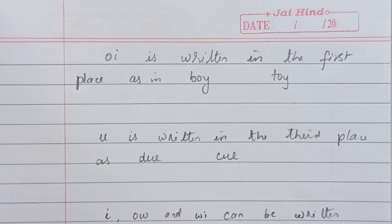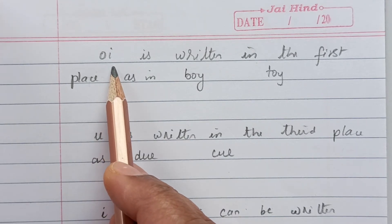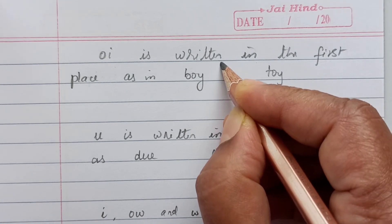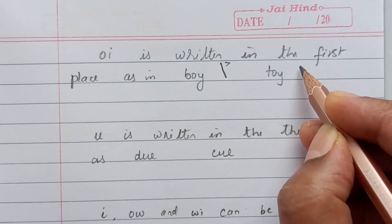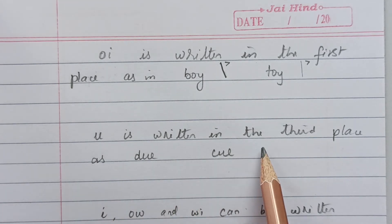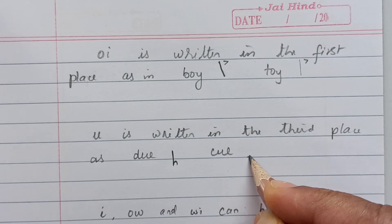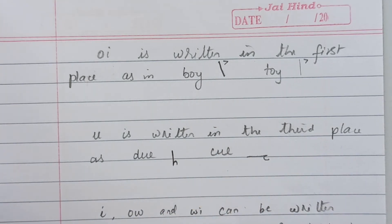The diphthongs can be remembered with the phrase 'I now enjoy music.' Before going further, we shall learn the place of writing these diphthongs. I can be written in the first place, as in 'boy' (B-I) and 'toy' (T-I). U is written in the third place, as in 'due' (D-U) and Q (C-U).